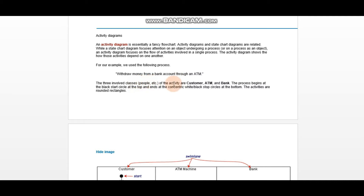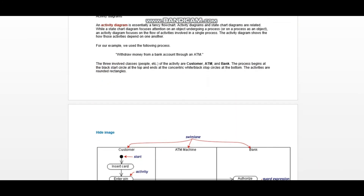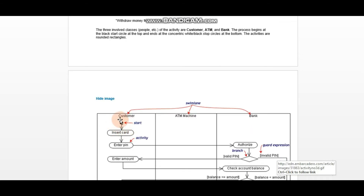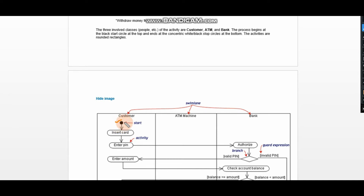Three classes will be involved: customer, ATM, and bank. The process begins at the black start circle at the top. Let's see what the black start circle is — this is that black start circle. It shows where the activity diagram starts.